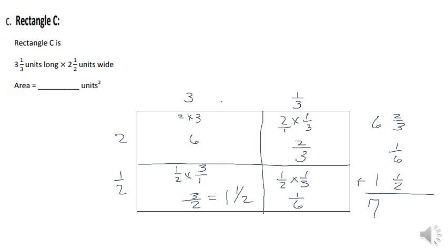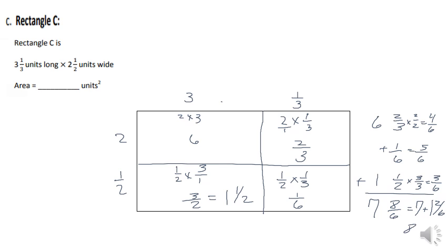I can add the whole numbers first. Then I convert two-thirds to sixths by multiplying by two over two, giving me four-sixths. Four-sixths plus one-sixth equals five-sixths. Then I convert one-half to sixths by multiplying by three over three, giving me three-sixths. Five-sixths plus three-sixths equals eight-sixths, which is one and two-sixths. Adding all whole numbers together gives us eight and two-sixths square units.